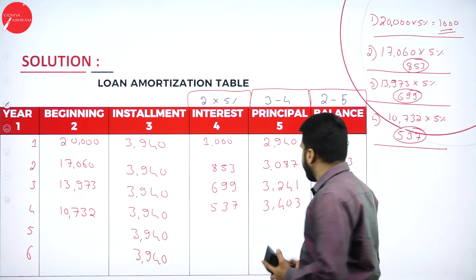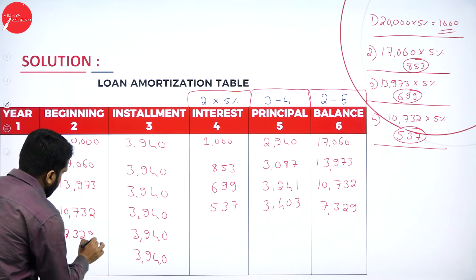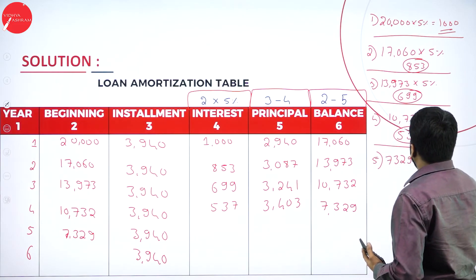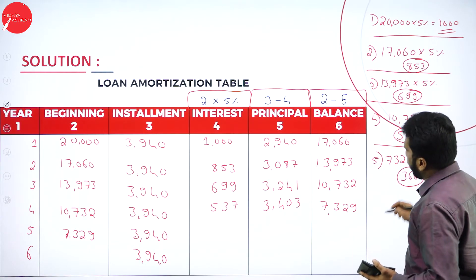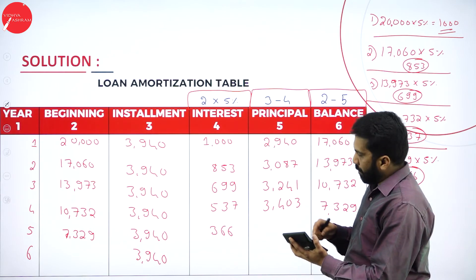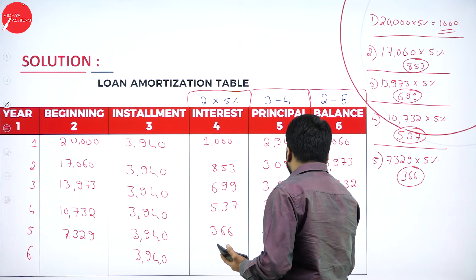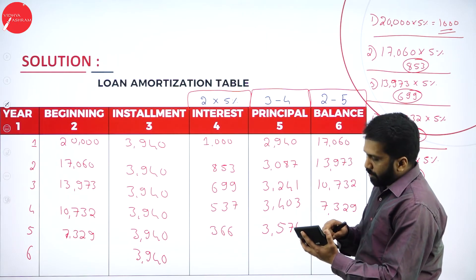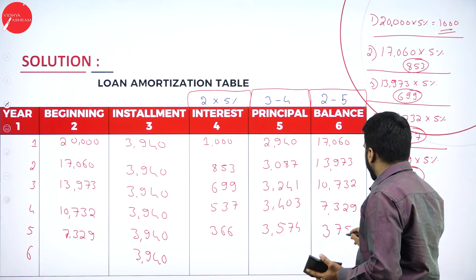For year 5, the beginning balance copies as 7,329. Interest: 7,329 multiplied by 5% gives 366. Principal: 3,940 minus 366 gives 3,574. Balance: 7,329 minus 3,574 gives 3,755. Year 5 is now completed. The same procedure we did in the previous session — previous problem was for 5 years, this one is for 6 years.